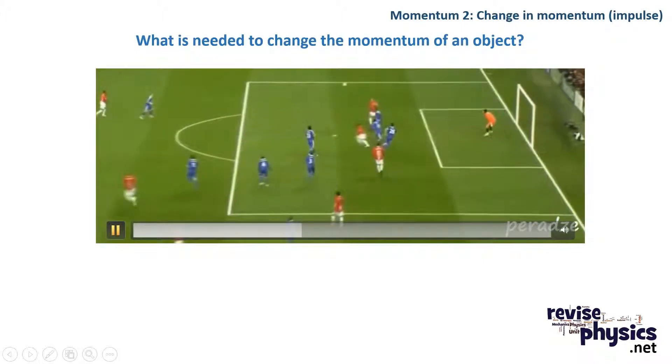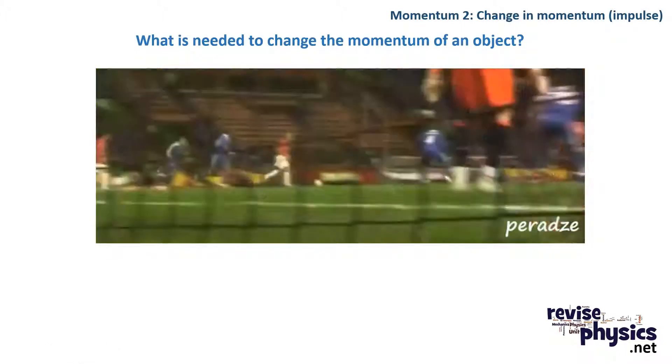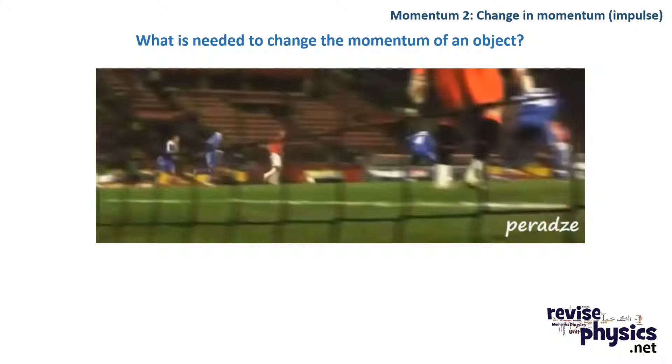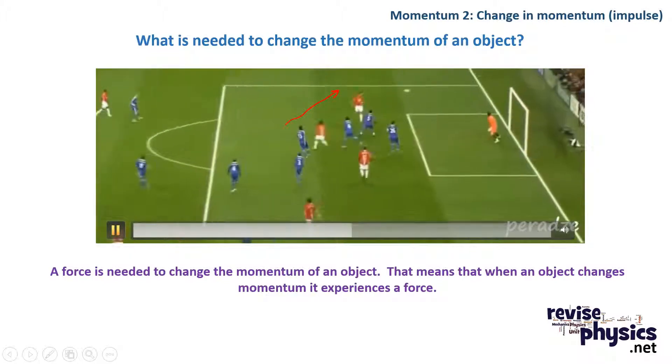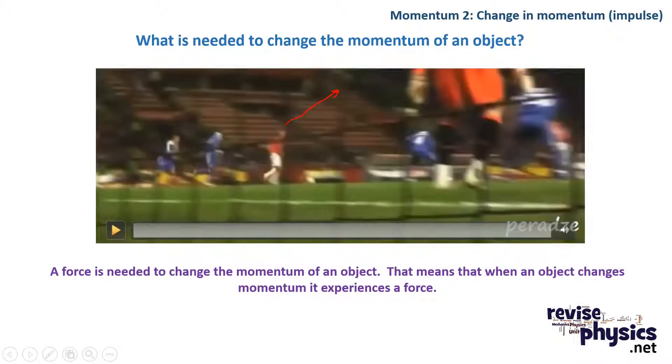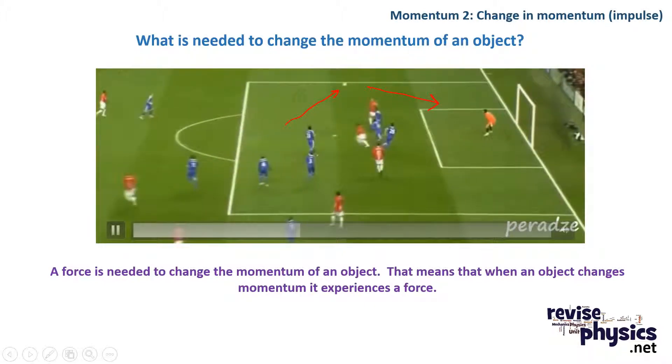Now in this video here, the football has been passed into the box and headed into the goal. If we look at it again, you will see that initially the football is acting in this path there, and once it's been headed, it's changed velocity.